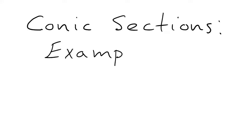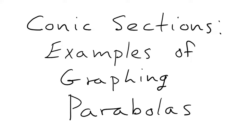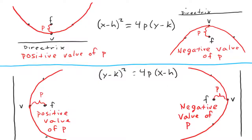Conic Sections: examples of graphing parabolas. In the previous video, we examined the equations for parabolas opening up, down, right, and left. When the square is on the x term, the parabola opens up or down — those parabolas are functions because they pass the vertical line test. When the square is on the y term, the parabola opens to the side; those parabolas are not functions and do not pass the vertical line test.